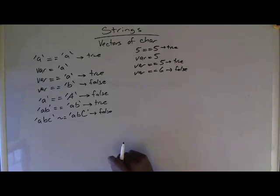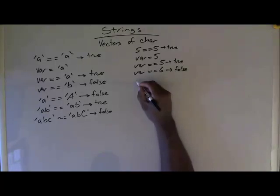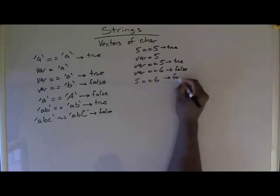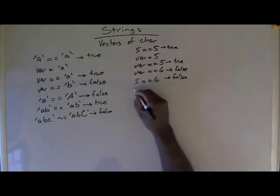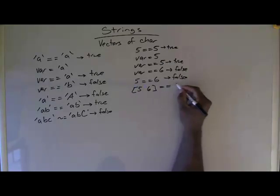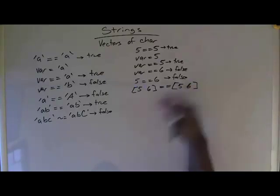Then I could come in and say does 5 equal 6? Once again, that's false. So a lot of same things on both sides. Then I could say does vector 5, 6 equal vector 5, 6, not 56, but 5, 6. And that would give me true.